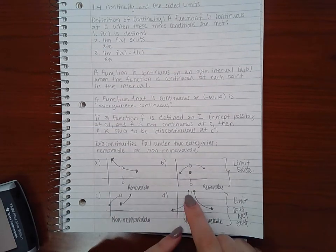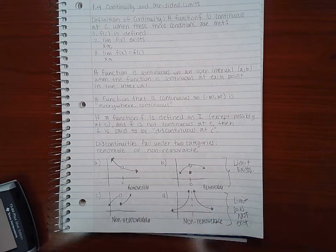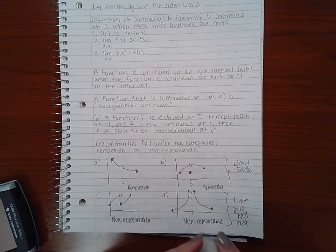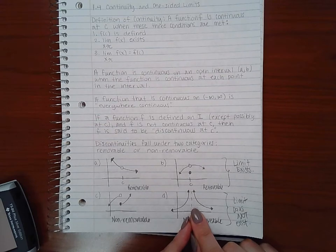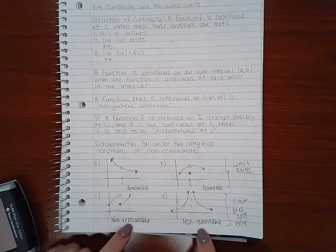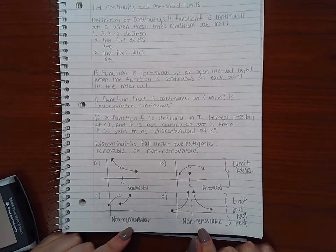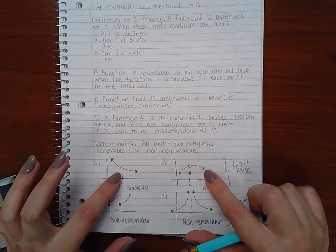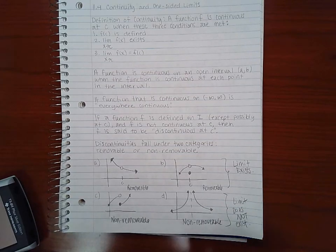Here, you have it going to infinity and infinity, and we had discussed that. We don't know if it's the same number or not. Therefore, this limit does not exist. So, these two, the limit does not exist, which is why they are non-removable. Here, the limits do exist, which is why those guys are removable.